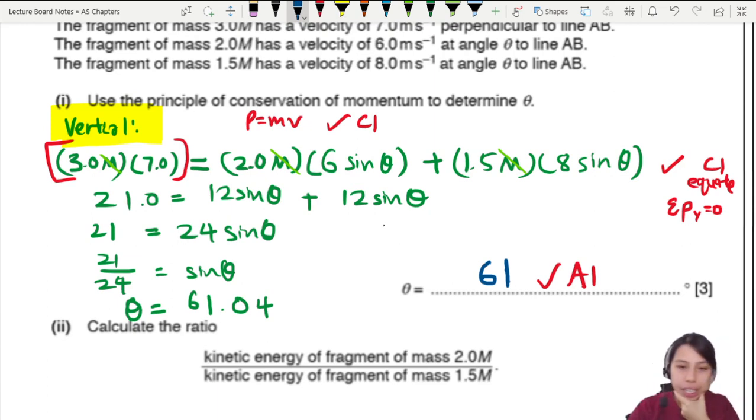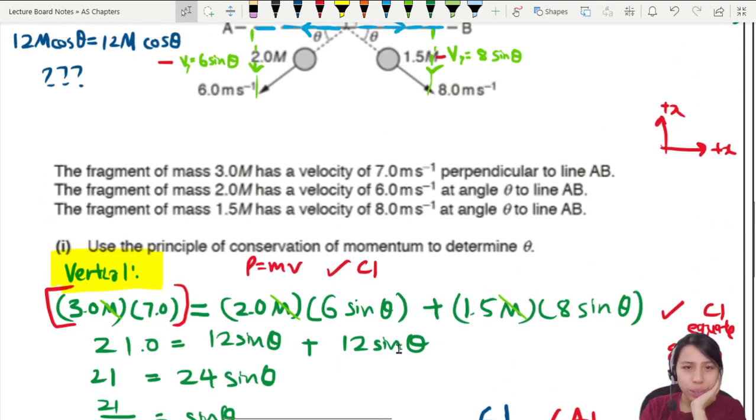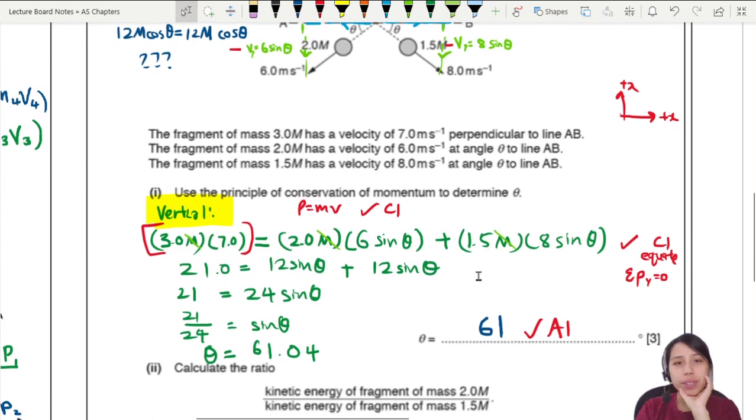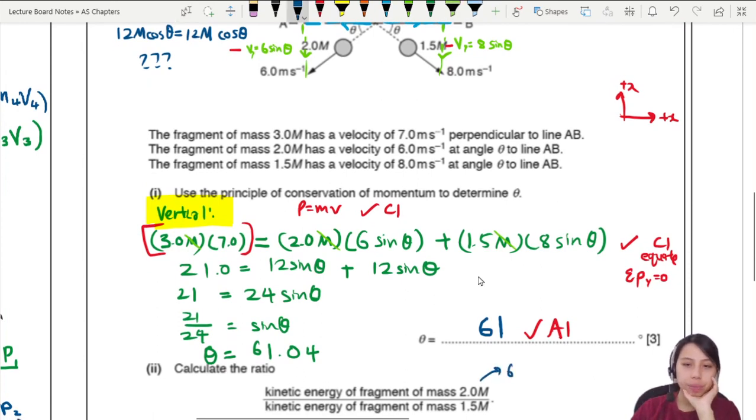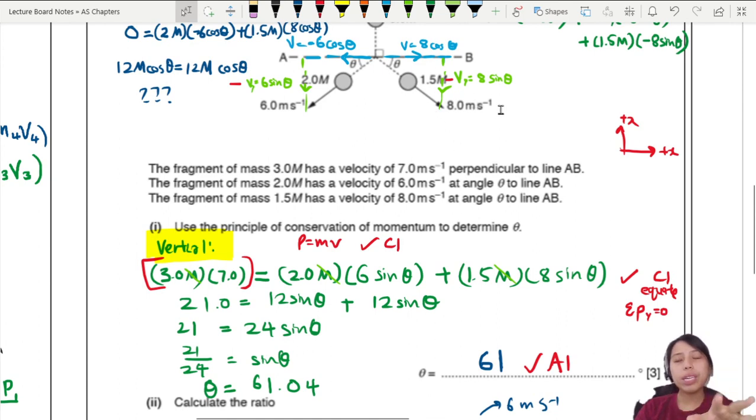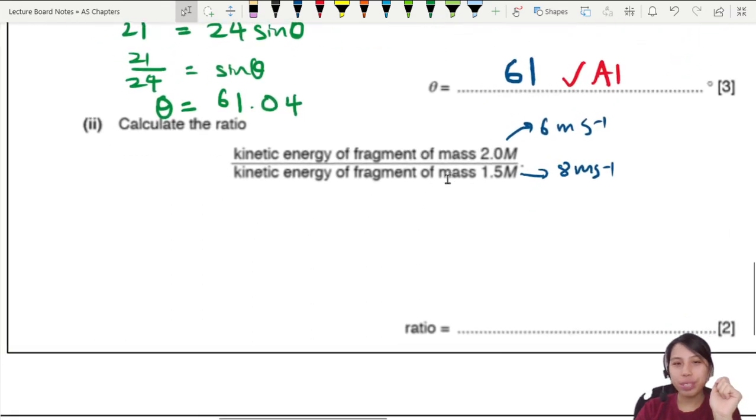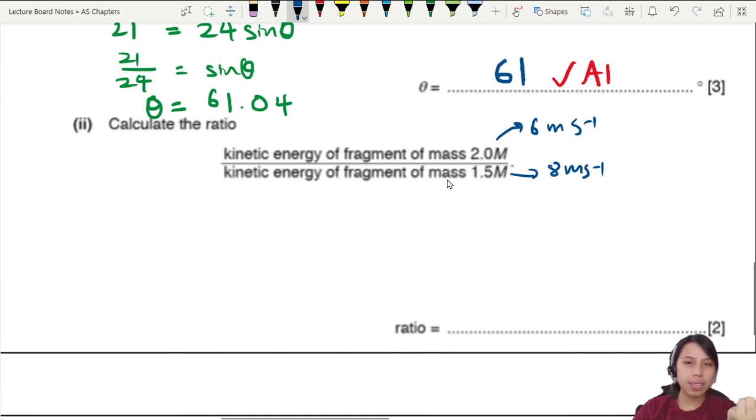Now we need to find a ratio of kinetic energy of fragment mass 2m and mass 1.5m. What is the velocity of them though? 2m. How fast are you moving 2m? 2m is moving at 6 meters per second. Make a note. 1.5m is moving with, look up there, 8 meters per second. So this one is 8. Is that it? How about the component? Never mind. They already gave us the speed. We don't need to worry about the component. You know why? Because speed is what we use in kinetic energy calculations.